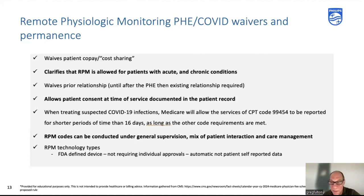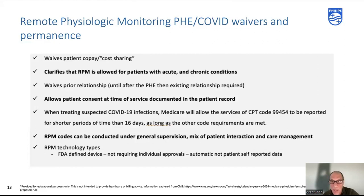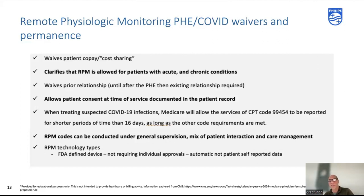We're back to 16 days of data transmission per 30 days per patient — the two-day allowance during COVID was specifically for COVID or suspected COVID patients. Worth noting: there is a bipartisan congressional bill by Balderson and Porter that would move the required days for 99454 from 16 to two days for a two-year pilot period, then go into study by HHS. That bill has made it up to the Energy and Commerce subcommittee.